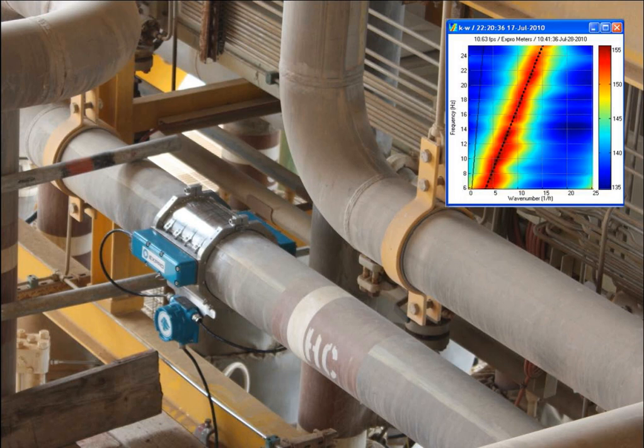Venturi meter. A venturi meter constricts the flow in some fashion and pressure sensors measure the differential pressure before and within the constriction. This method is widely used to measure flow rate in the transmission of gas through pipelines and has been used since Roman Empire times. The coefficient of discharge of venturi meter ranges from 0.93 to 0.97. The first large-scale venturi meters to measure liquid flows were developed by Clemens Herschel who used them to measure small and large flows of water and wastewater beginning at the very end of the 19th century.